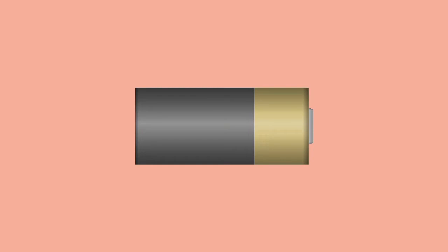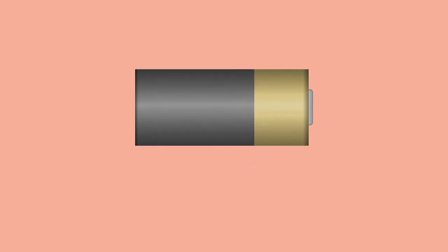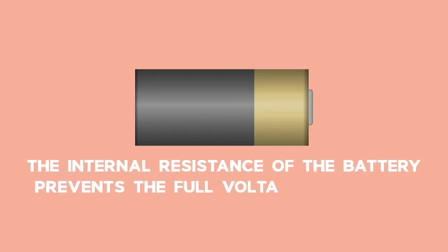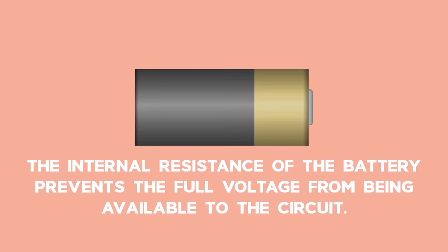A battery that is labeled 1.5 volts can deliver 1.5 joules of electrical potential energy to a charge of 1 coulomb. The internal resistance of the battery prevents the full voltage from being available to the circuit.